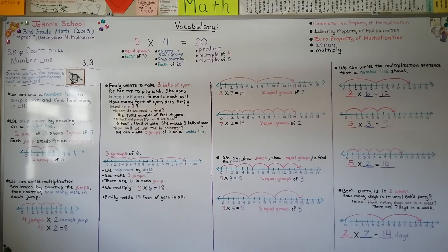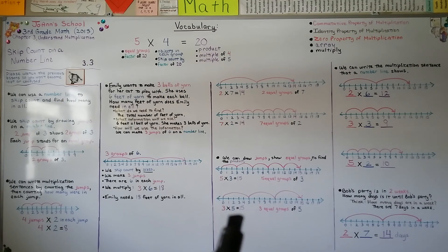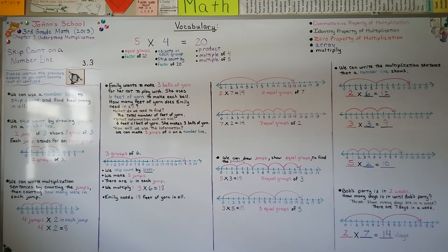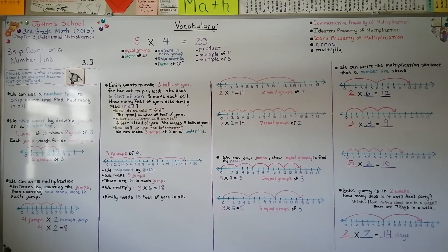Remember, when you're making your jumps on the number line, it's the second number in the multiplication sentence that tells you how many to jump. The first number tells you how many jumps there are. We have three jumps of five, so we have three times five. I hope you have a great day and I'll see you next time. We're going to talk about modeling multiplication by drawing a diagram in Lesson 3.4.